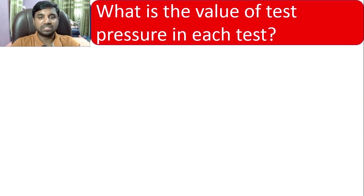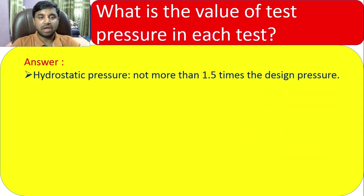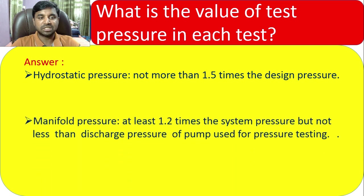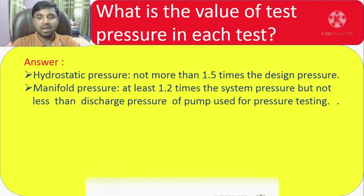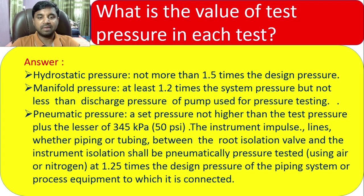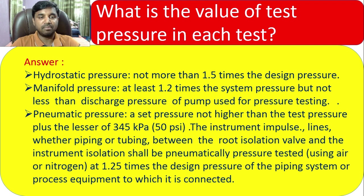Question 3: What is the value of test pressure in each test? Hydrostatic pressure should not be more than 1.5 times the design pressure. Manifold pressure — at least 1.2 times the system pressure but not less than the discharge pressure of the pump used for pressure testing. Pneumatic pressure — set pressure not higher than the test pressure plus the lesser of 345 kPa or 50 psi. Instrument pulse lines shall be pneumatically pressure tested at 1.5 times the design pressure of the piping system or process equipment to which it is connected.